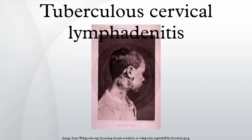The most usual signs and symptoms are the appearance of a chronic, painless mass in the neck, which is persistent and usually grows with time. The mass is referred to as a cold abscess, because there is no accompanying local colour or warmth, though the overlying skin may acquire a violaceous colour.